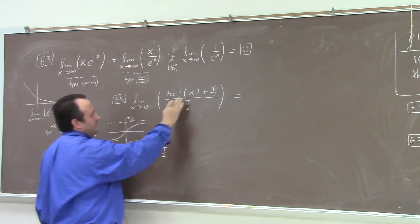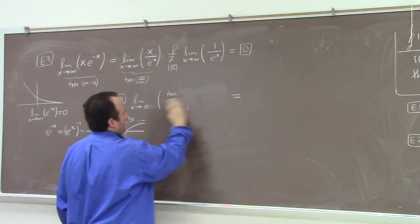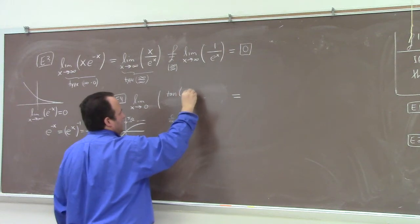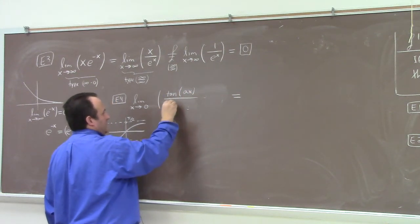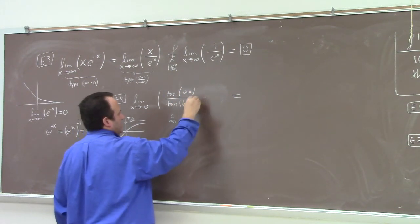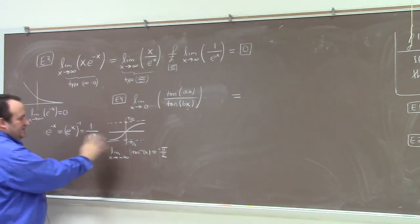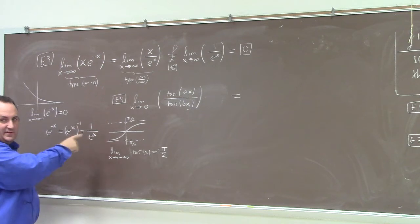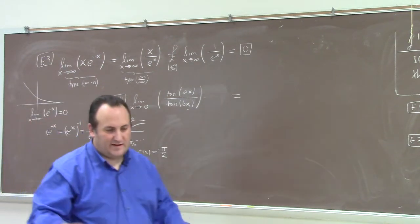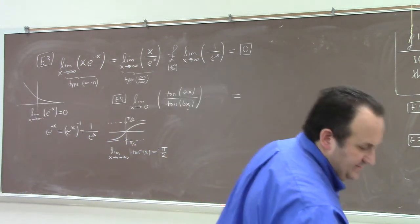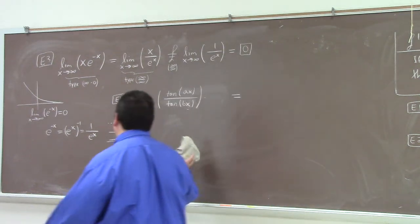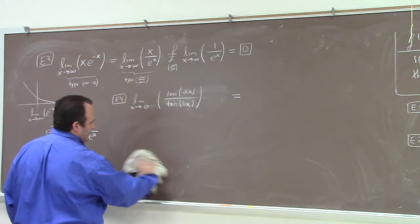All right. Let me try something a little different. How about this? We go to 0. Tangent of ax over tangent of bx. Here, a and b are constants. I mean, this was not a waste. It's good for me to review the limit as x goes to minus infinity of inverse tangent with you.